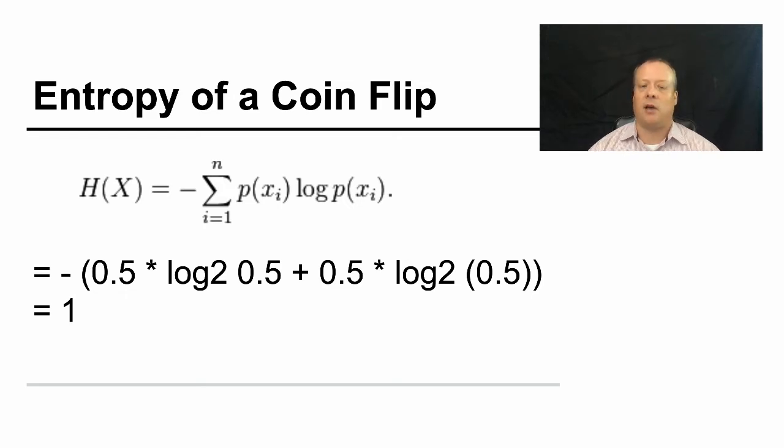And for a variety of reasons, this is often done in base two. Plus one half times the log of base two of one half, which is the probability it comes up tails. And if you do all that calculation and calculate out that math, you're essentially going to get one, which means that this is a high entropy situation. You don't know whether the coin is going to wind up heads or tails.